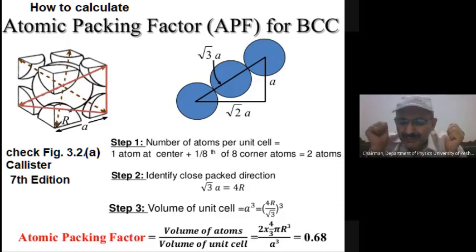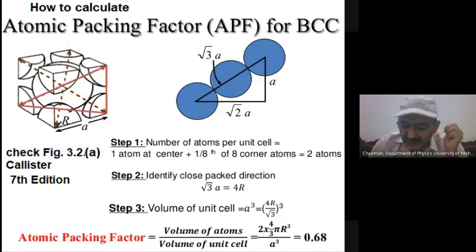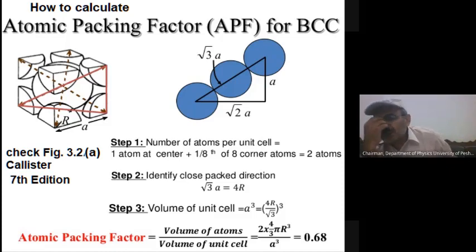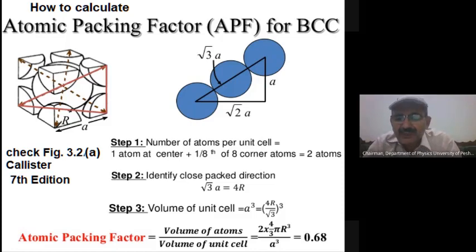For example, if atoms are four angstroms away in all directions, the property of interest is how much of the material is actually there. If the material property is present but there are many empty spaces, the density will be very low — effectively measuring air plus the material property. So how much space is open and how much is covered by the material or unit cell is very important.